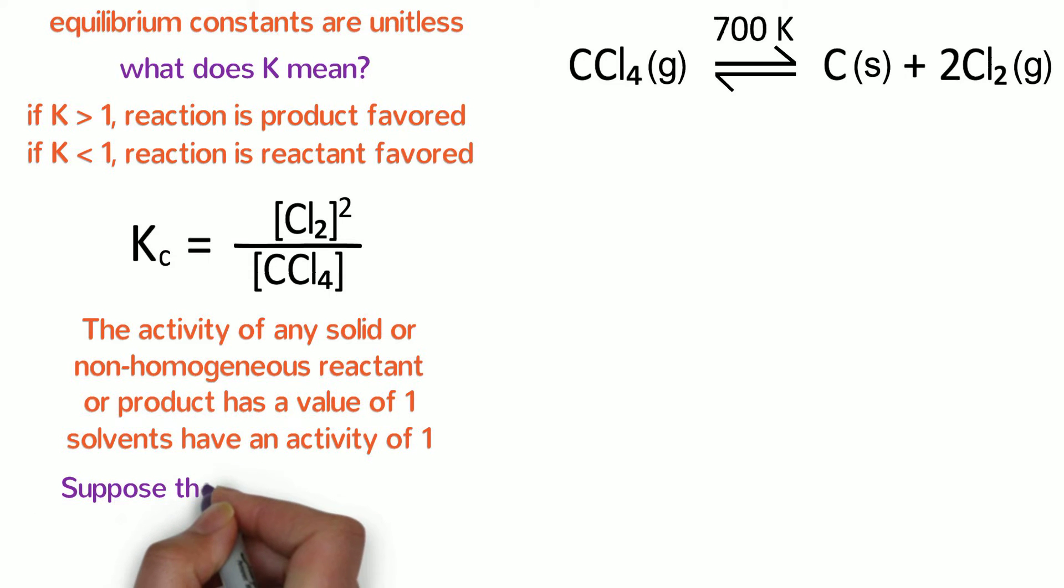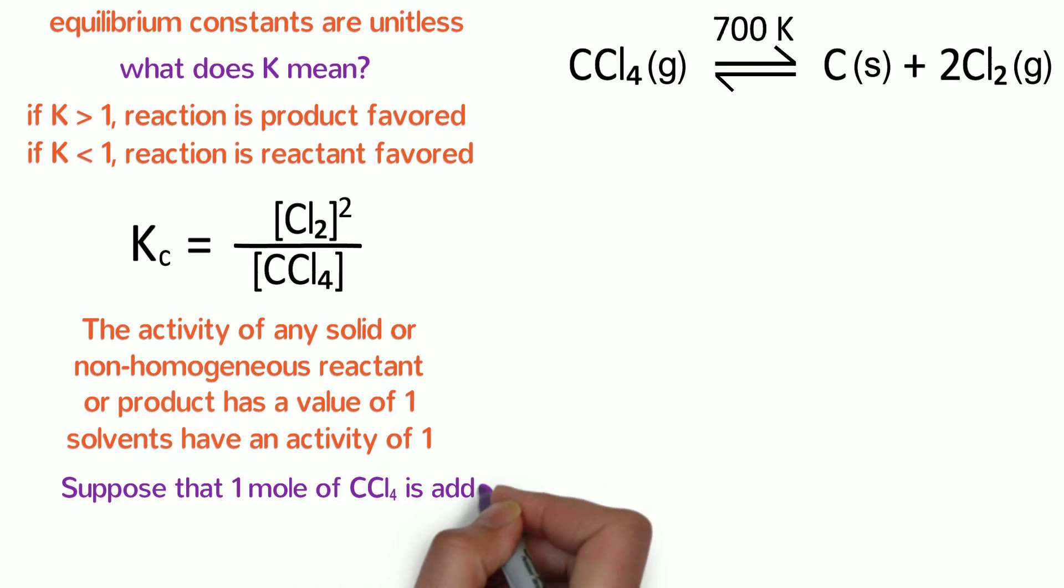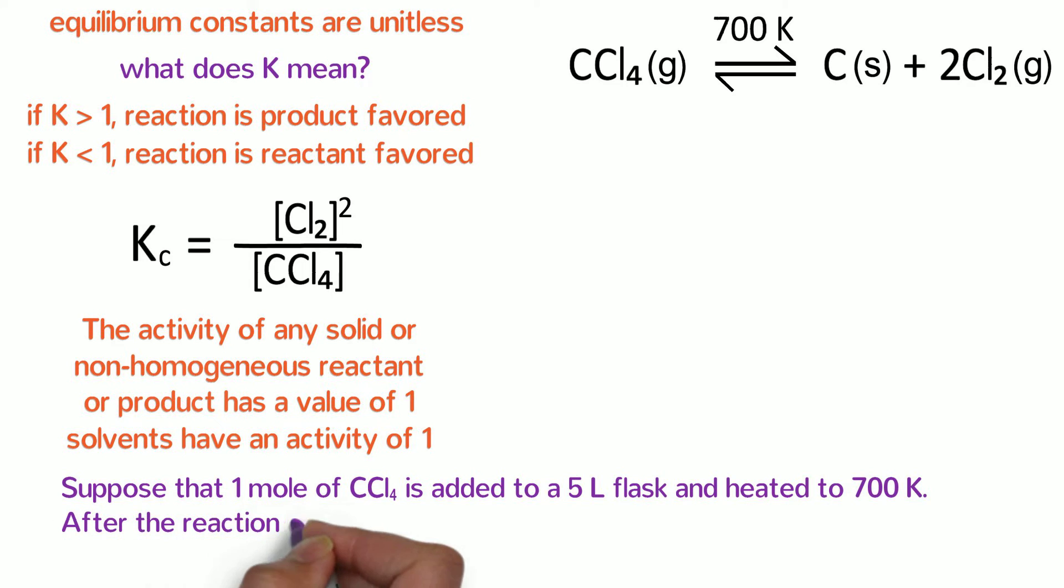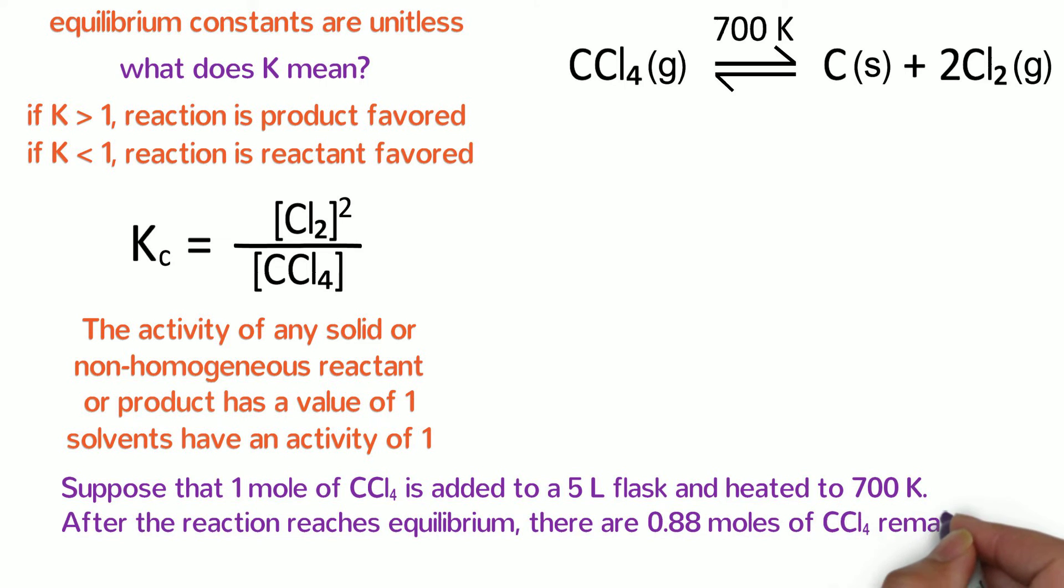Let's try another problem. Suppose that 1 mole of carbon tetrachloride is added to a 5 liter flask and heated to 700 Kelvin. After the reaction reaches equilibrium, there are 0.88 moles of carbon tetrachloride remaining. Calculate the equilibrium constant of the reaction. When faced with a problem like this, the best way to solve it is to set up a RICE chart.